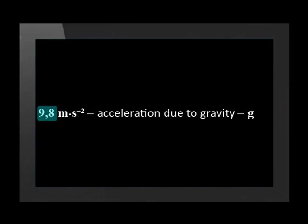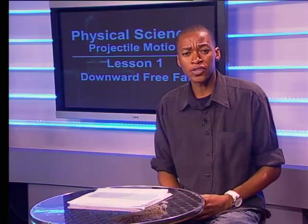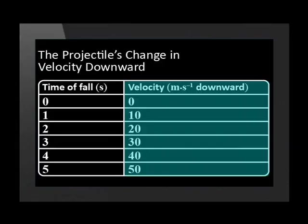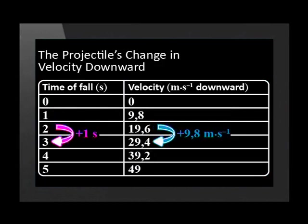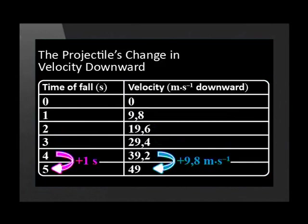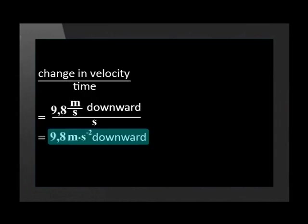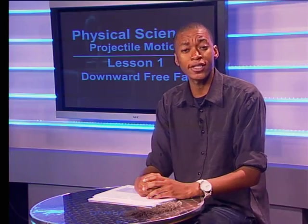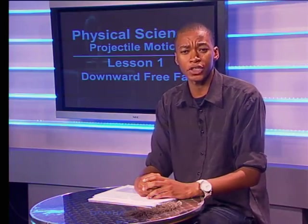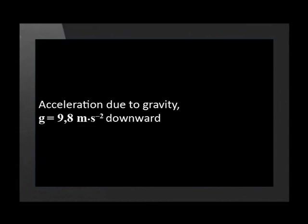If real data is used, g is closer to 9.8 meters per second squared. Sometimes we round this off to 10 to make things easier. When real data is used, look carefully and the pattern becomes obvious: for every second the ball falls, its velocity increases by 9.8 meters per second downward. So the ball's change in velocity per time is 9.8 meters per second squared downward. The magnitude of g is 9.8 meters per second squared and its direction is downward.